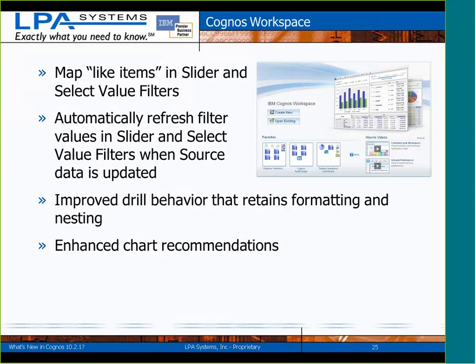Cognos Workspace has a few changes in this release. Probably the most welcome is the ability to map like items in Slider and Select Value Filters. The notion: in one report widget I have Year and in another I have Start Year. Cognos Workspace 10.2.0 treats those as two separate items. When you add a Slider Filter or Select Value Filter, it brings them up as separate fields. Even though they're both years and you'd like to filter both widgets on 2010 or 2013, you couldn't in 10.2.0 because they're separate columns. In 10.2.1, you can fix that.